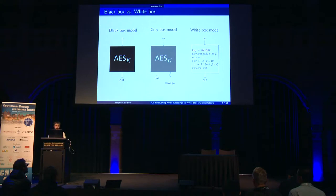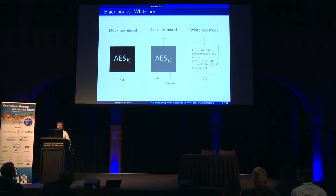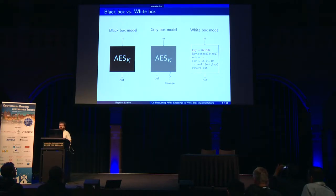This is a classical model, and it evolved recently into the gray box model, where the hypotheses are the same, except that now you also have access to some leakage when the computation is done, such as electromagnetics, power, or whatever.